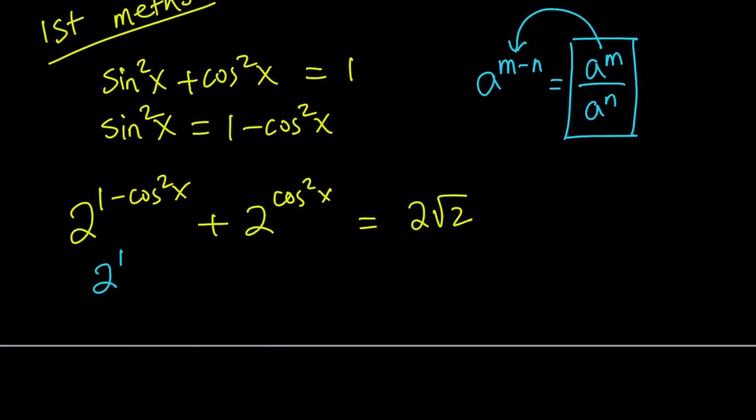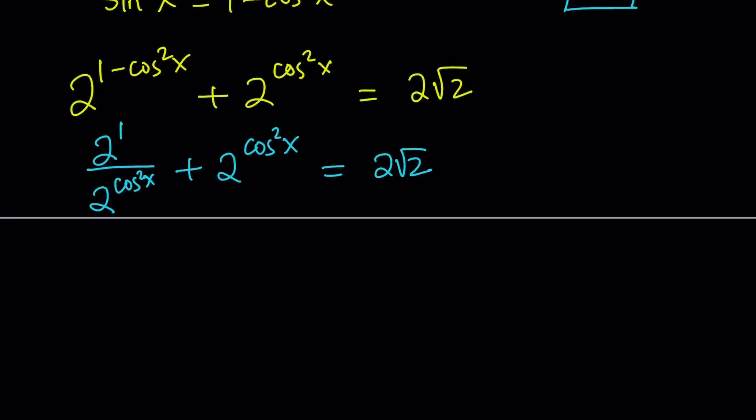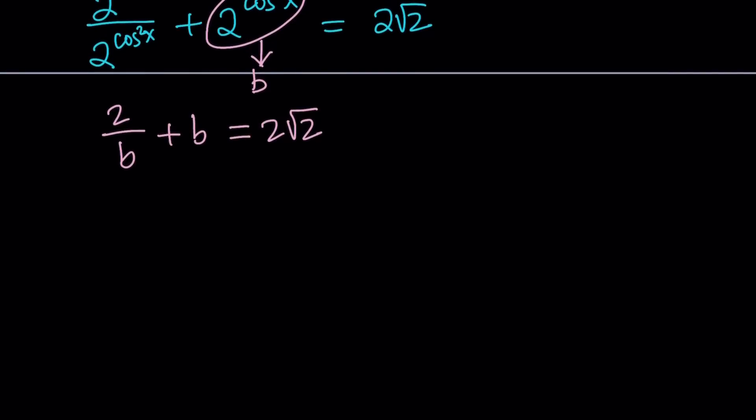So this can be written as 2 to the power 1 divided by 2 to the power cosine squared x plus 2 to the power cosine squared x equals 2 times the square root of 2. Now, 2 to the power 1 equals 2, so we can write this as 2 over 2 to the power cosine squared x plus 2 to the power cosine squared x. Notice that 2 to the power cosine squared x is being repeated, so this calls for substitution. Let's go ahead and call this b. From here we get 2 over b plus b equals 2 root 2. And then, if you multiply both sides by b, then you get 2 plus b squared equals 2 root 2b. Let's put everything on the same side: b squared minus 2 root 2b plus 2 equals 0.